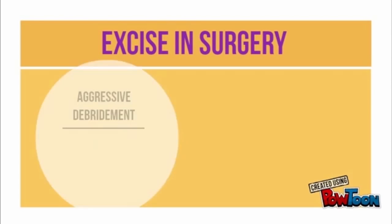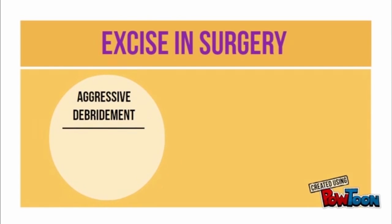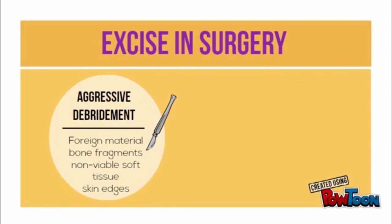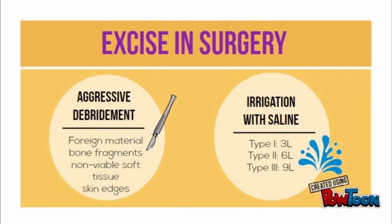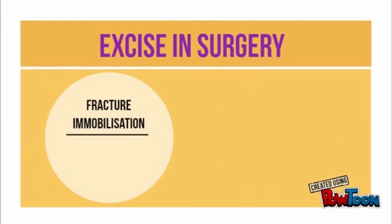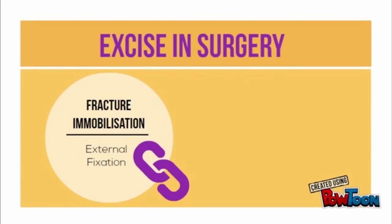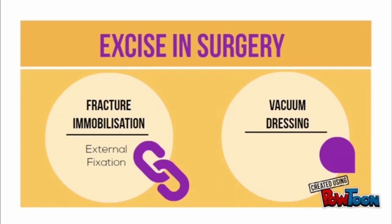The next step is excision and surgery. Aggressive debridement of foreign material, bone fragments, and non-viable soft tissue is performed. Then irrigate with saline of more than 3 litres, depending on the classification. External fixation is indicated so that the wound can be monitored and treated, and a vacuum dressing can then be applied following the principle of delayed wound closure.